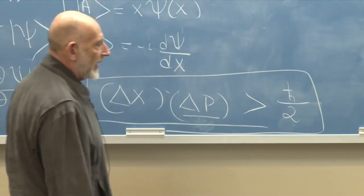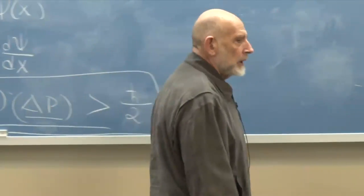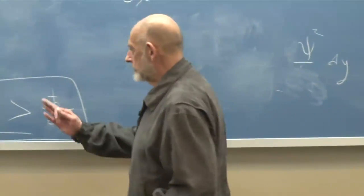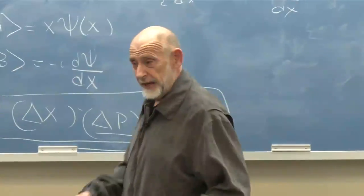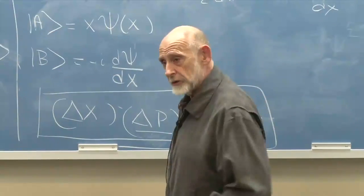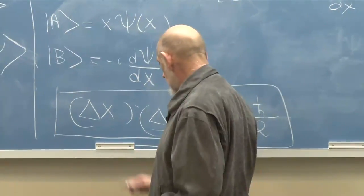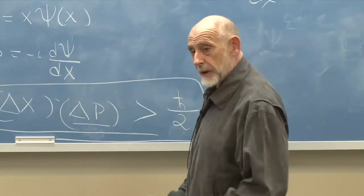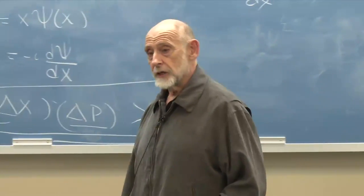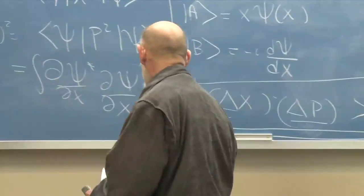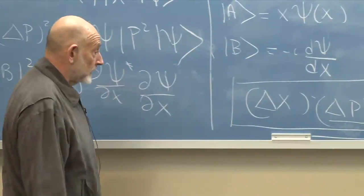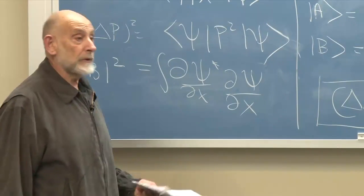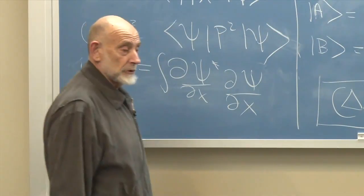The uncertainty in position times the uncertainty in momentum is bigger than h-bar over two. This would be true for any direction of space — any generalized coordinate in mechanics: its uncertainty times the uncertainty in the corresponding conjugate momentum is bigger than h-bar over two. Any questions about this particular version of the uncertainty principle?